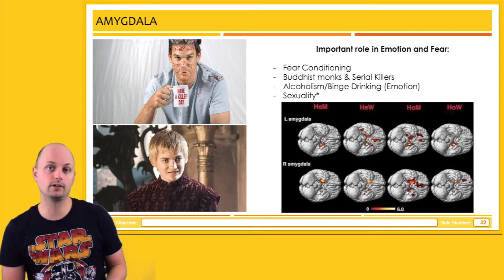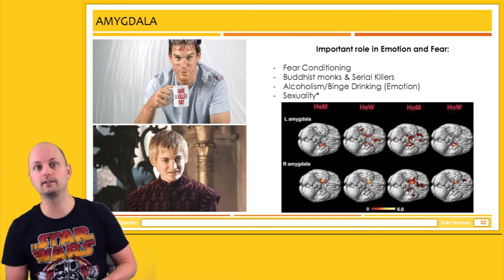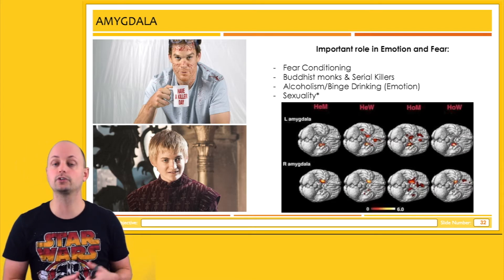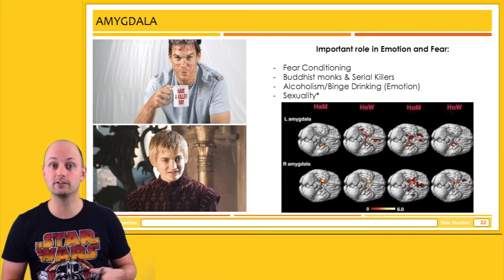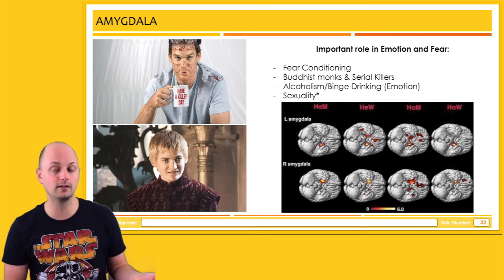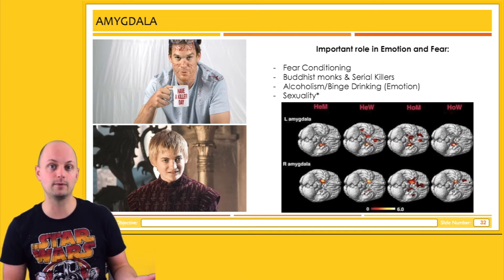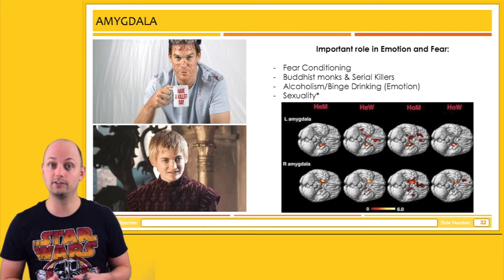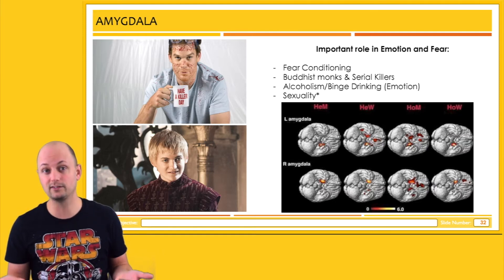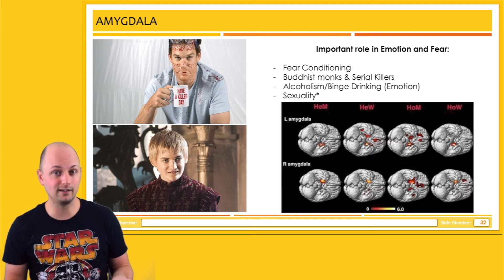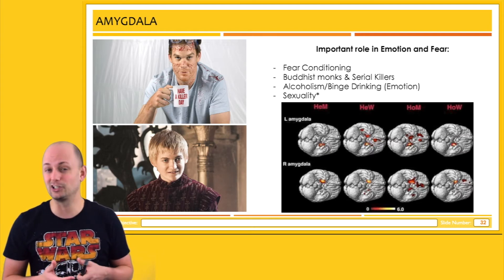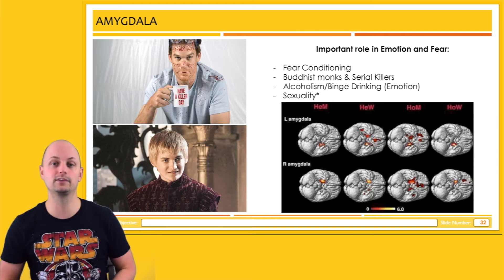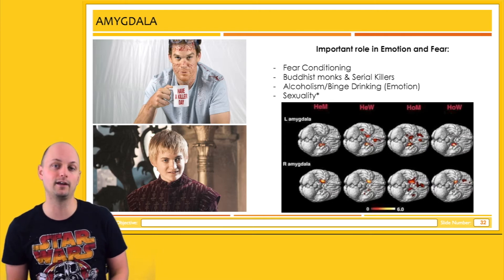There were a few studies comparing activation patterns in the amygdala among cisgender straight men, cisgender gay men, and cisgender straight women. Unfortunately, this type of work ends up being similar to studies on the frontal lobe — there's a tremendous amount of bias, and it's really hard to imagine anything good coming from this type of research as it stands right now.